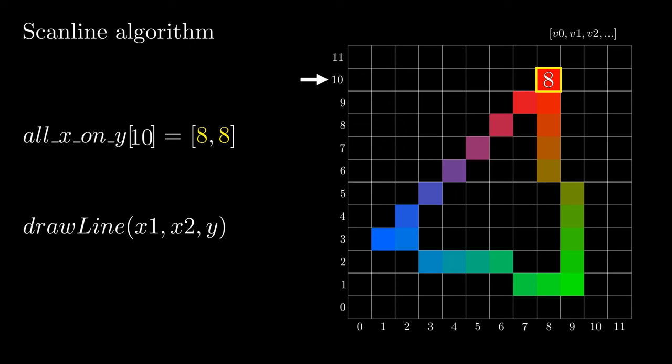On height 10, we can see that the value 8 is stored twice. This is done so we don't have to check the length of the list every time we want to draw a line.